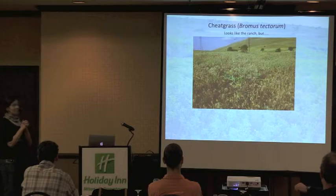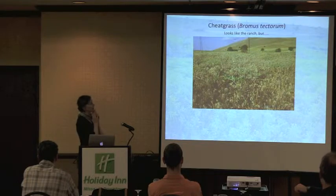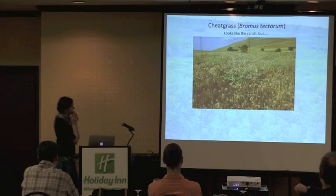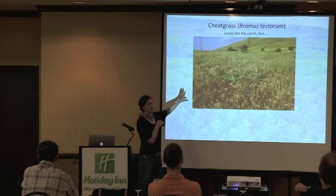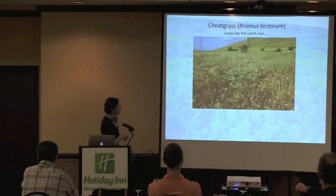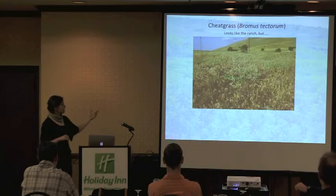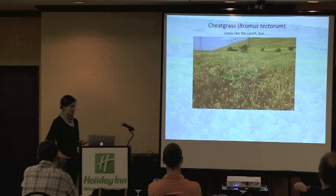Another thing I noticed was cheatgrass. A photo I took in Turkey could easily be mistaken for a disturbed area on the ranch — it was a road construction site. Cheatgrass really takes advantage of disturbed environments regardless of where it is. The difference in Turkey is that over time, after disturbance, other plants start replacing cheatgrass. Whereas here, once it's in, it's really hard to get rid of unless you spray.